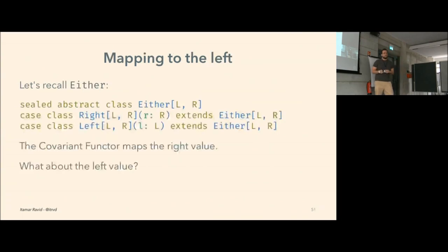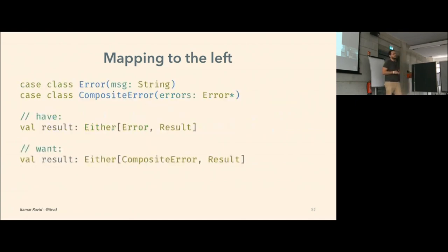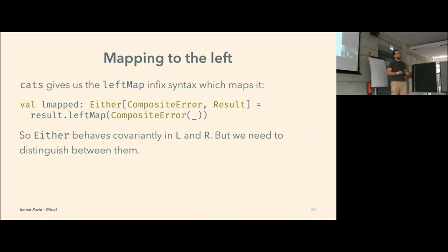Let's recall Either — our lovely data type. It's defined by two cases, Right and Left. We can handily map the Right value using the covariant functor instance and the map function. But what about the Left value? How do we apply some function to that value? Say we have two types of errors: a simple error and a composite error composed of several results with the error type in its Left type parameter. We'd like to convert the simple error to a composite error — but we can't just use `map`, we need to distinguish between the type parameters.